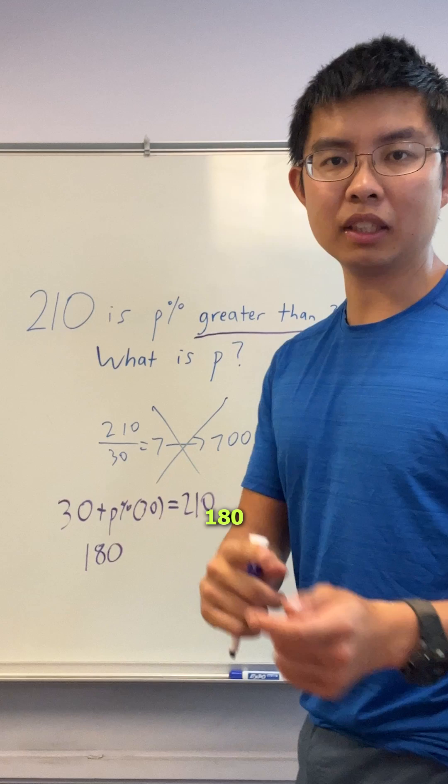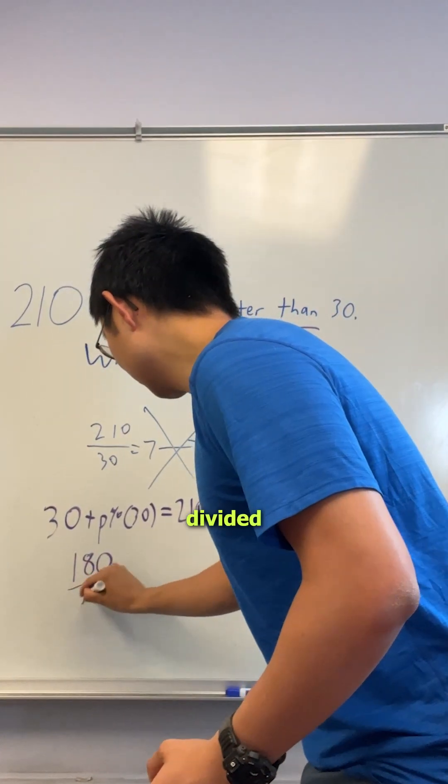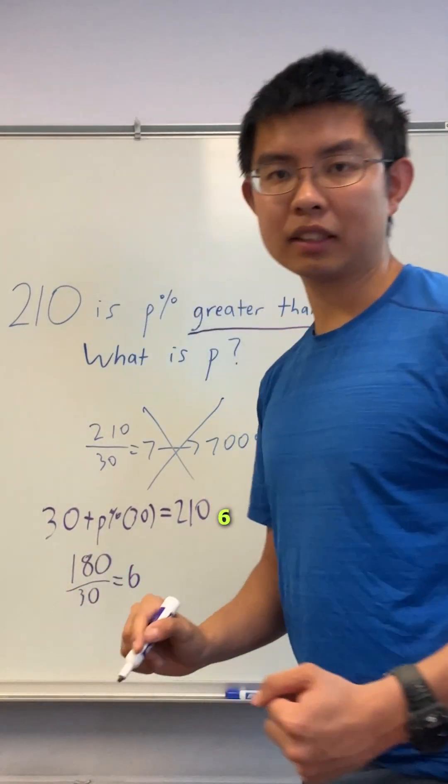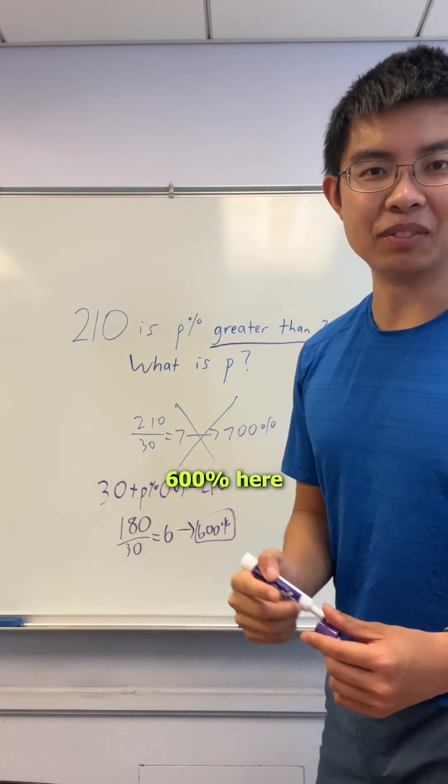You can go ahead and do that division, 180 divided by 30 equals 6. And so, P, your answer, is actually going to be 600% here.